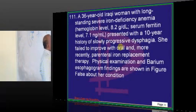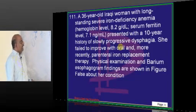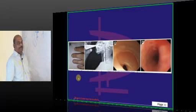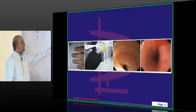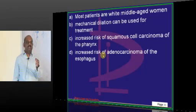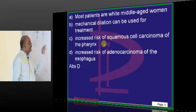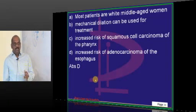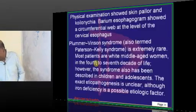A 36-year-old woman with long-standing severe iron deficiency anemia, low serum ferritin, and slowly progressive dysphagia. You are finding koilonychia and an esophageal web, also visible on barium — classical of Plummer-Vinson syndrome. It is common in middle-aged women. You need to do mechanical dilatation. There is a risk of squamous cell carcinoma of both the pharynx and esophagus — not adenocarcinoma, but squamous cell carcinoma.